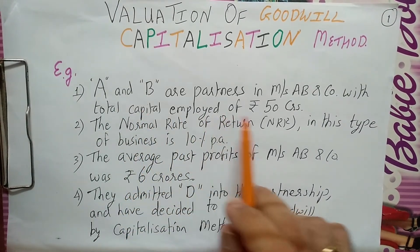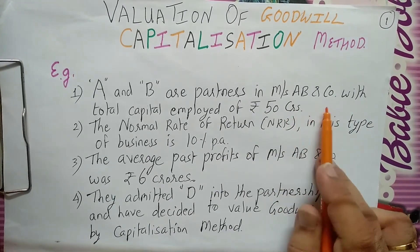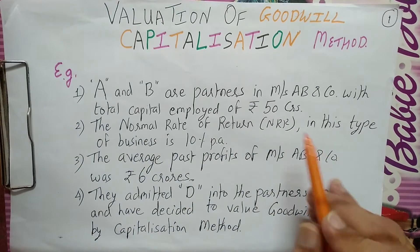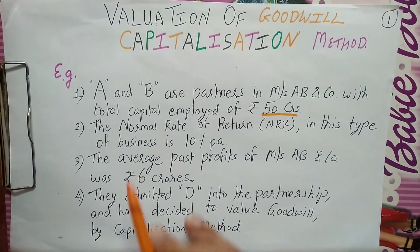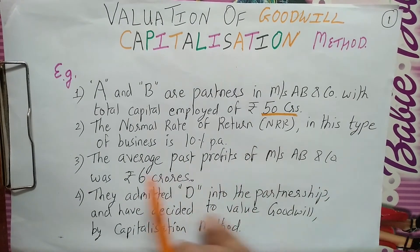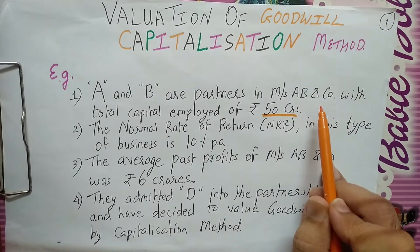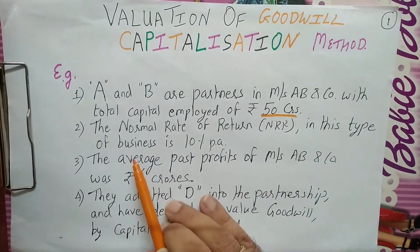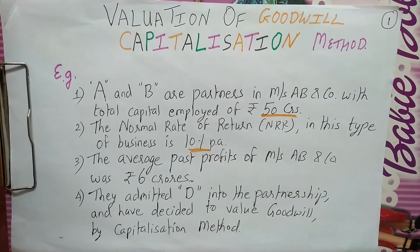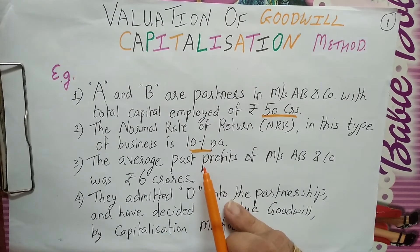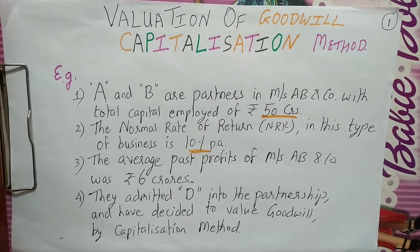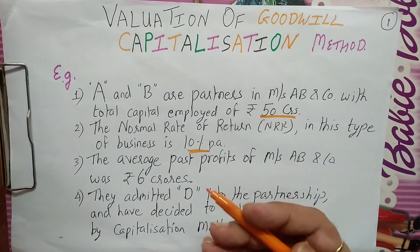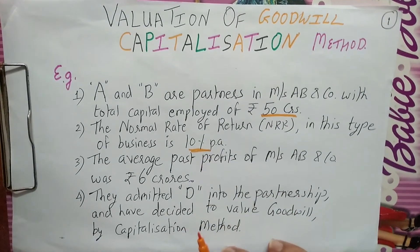A and B are partners of Messrs AB and Company — that is the name of the firm. A and B are partners in this firm with total capital employed of 50 crores. Let us say AB and Company are into ready-made garments — just an example. Normal rate of return in this type of business is 10% per annum. Means if you employ capital of 100 rupees, you will get a return or profit of 10 rupees every year — 100 rupees lagaya to 10 rupees milega in this type of business.